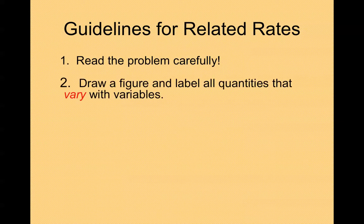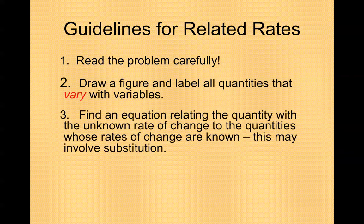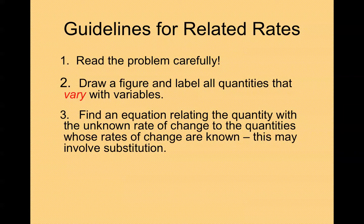There are some guidelines for related rates that might help you solve these problems. First, read the problem carefully. Second, draw a figure and label all quantities that vary with variables. Three, find an equation relating the quantity with the unknown rate of change to the quantities whose rate of change are known. This may involve substitution.